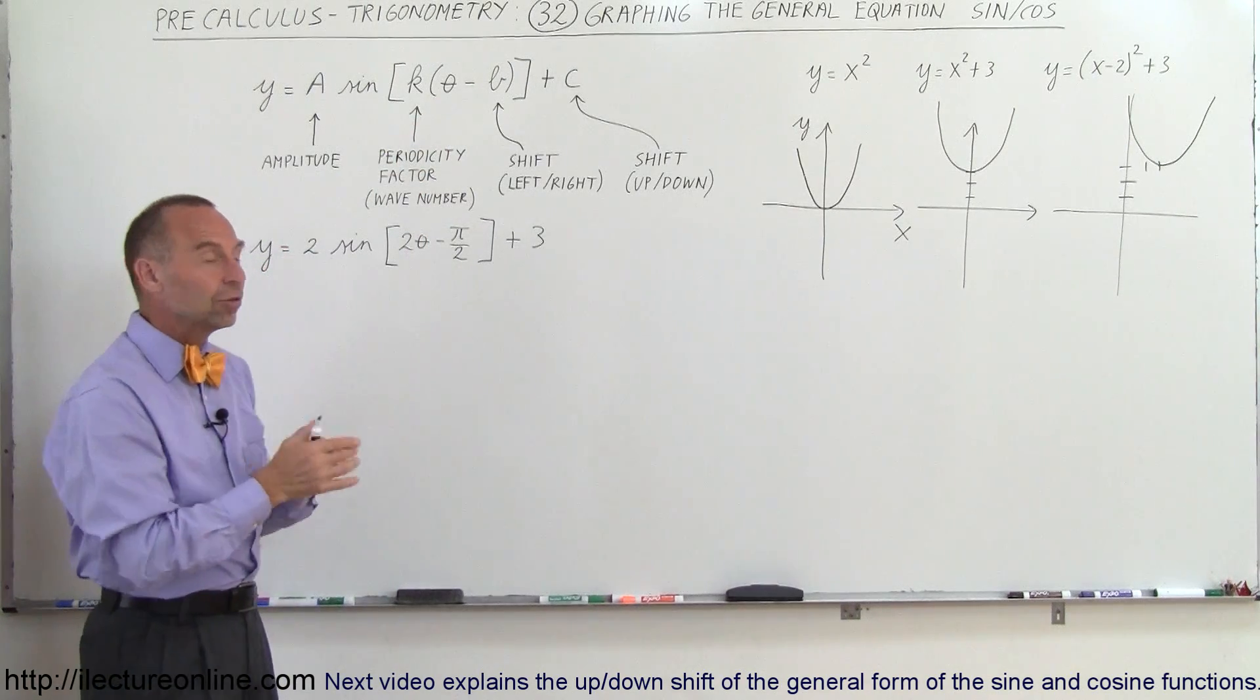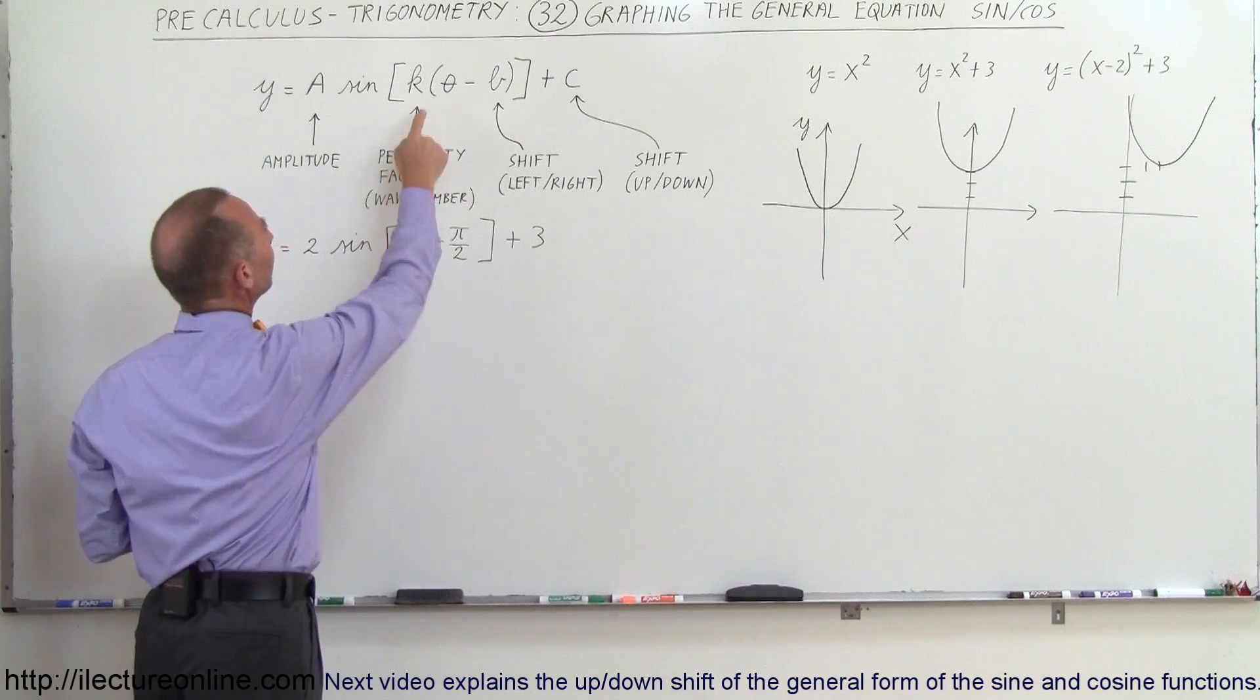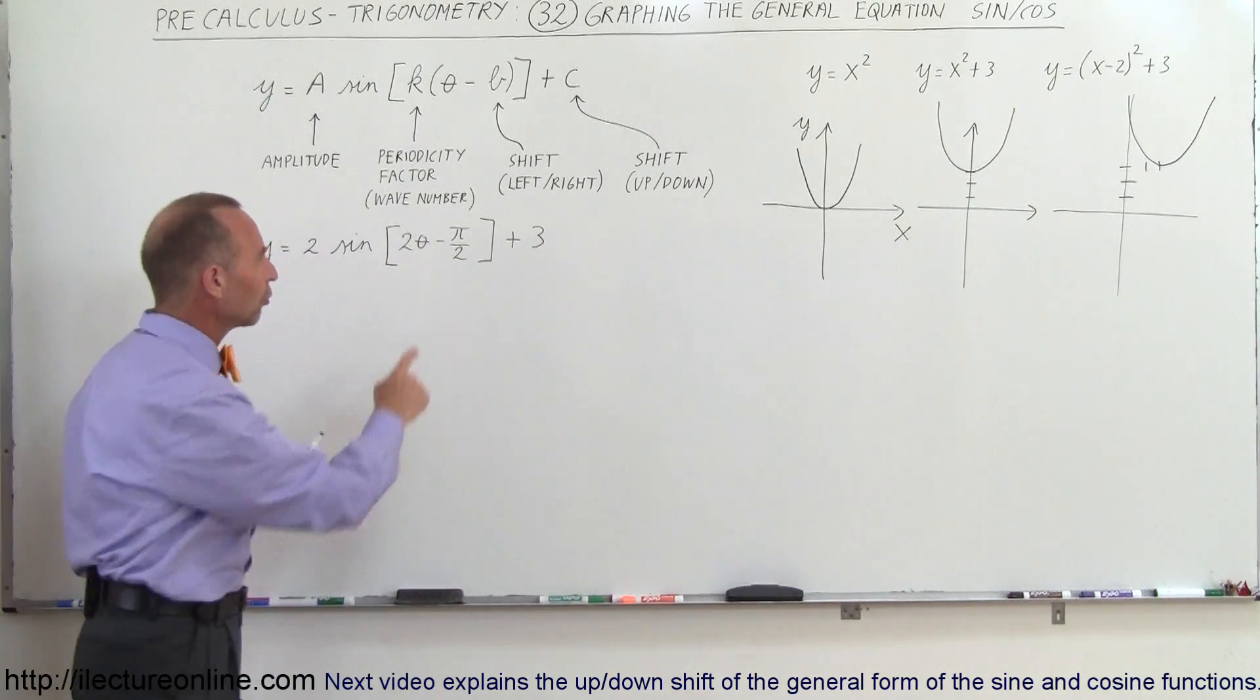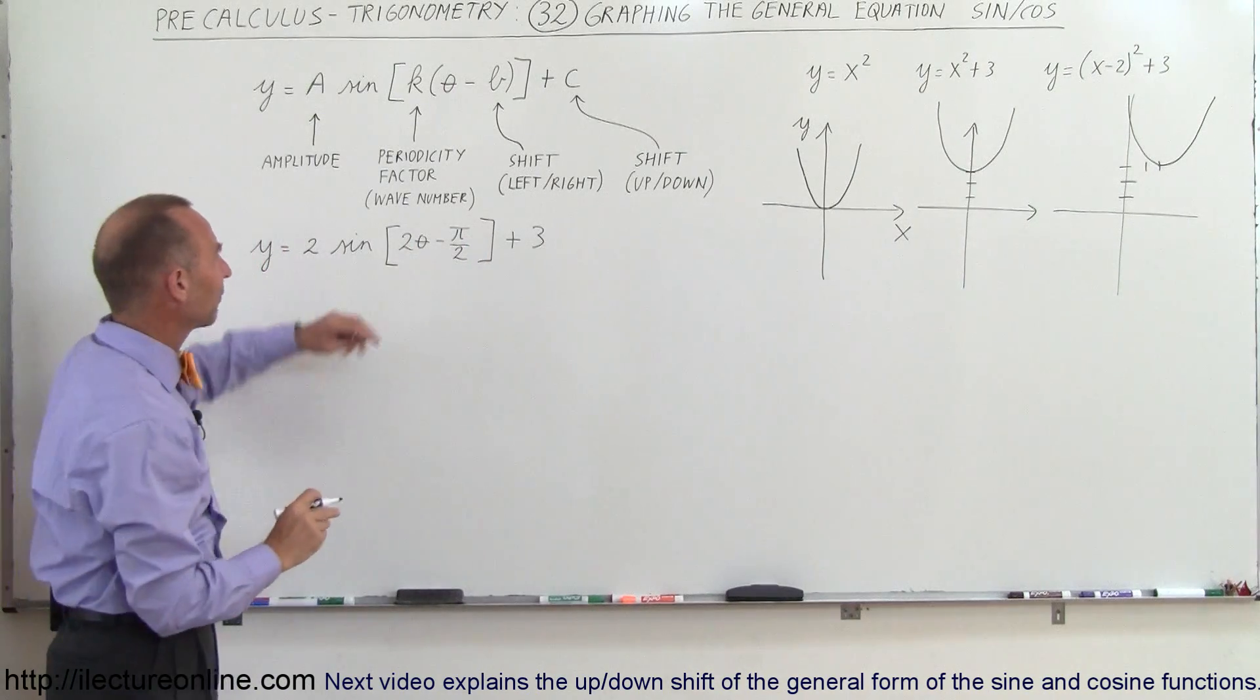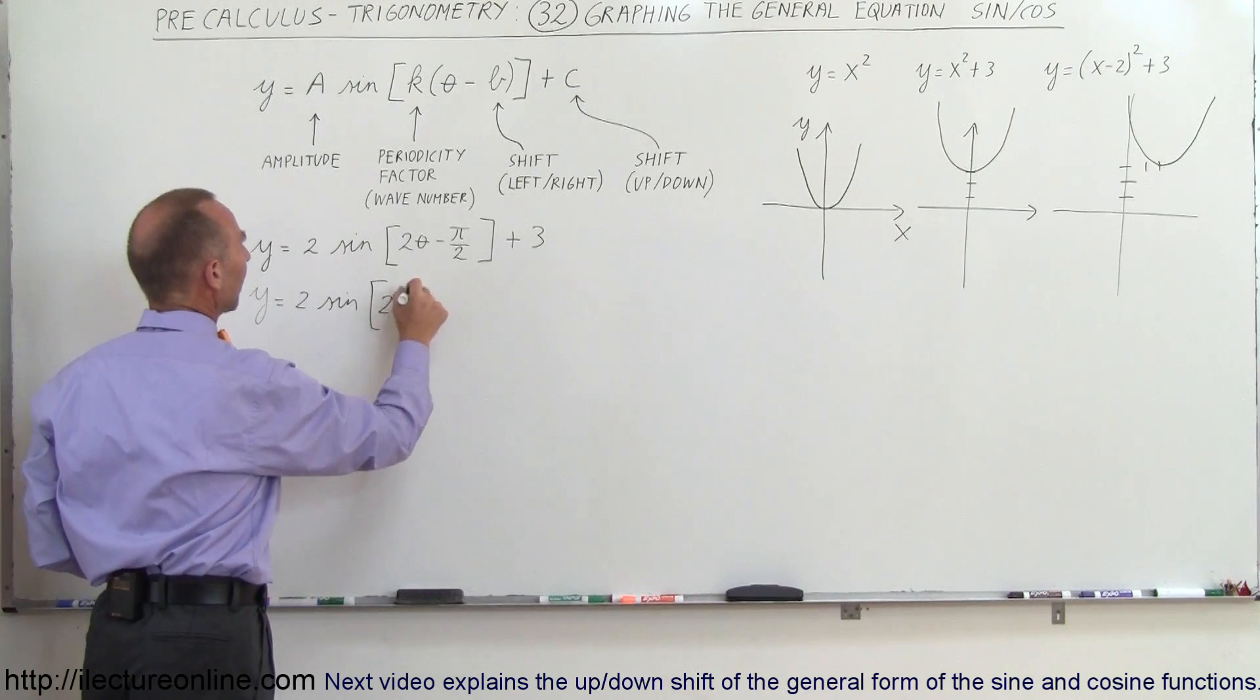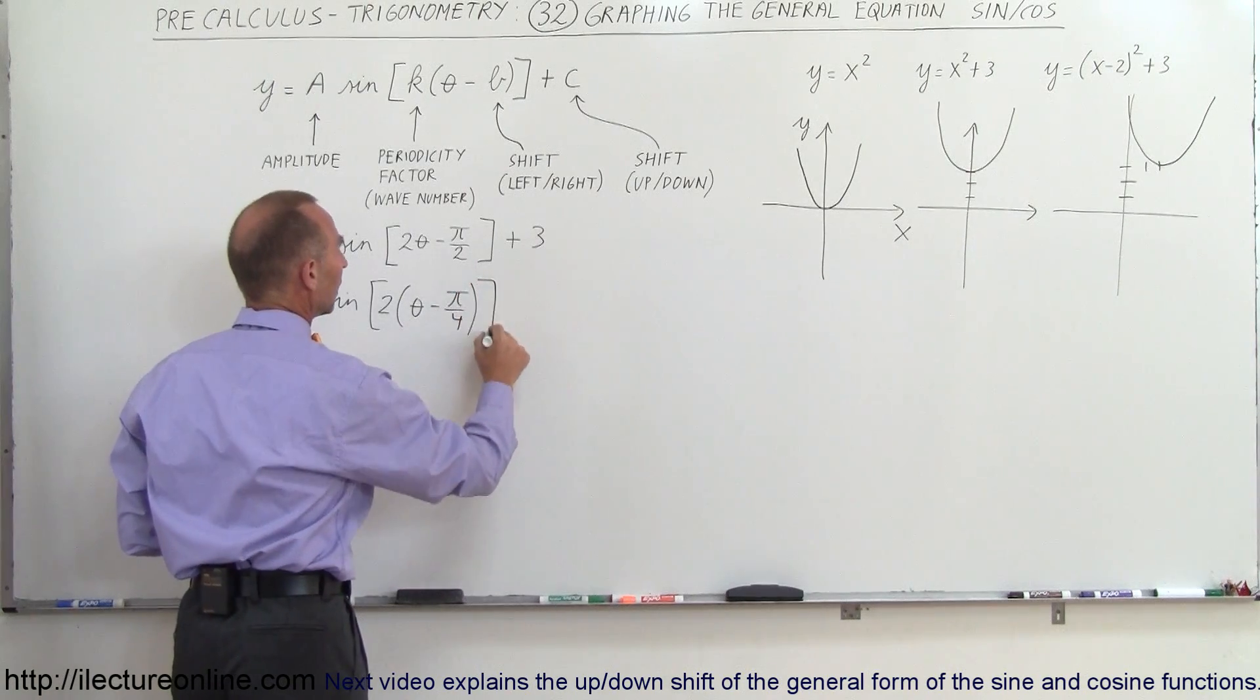The periodicity factor, the number that determines how many complete cycles you're going to have in a 2π period, needs to be taken out of the parentheses like this. So it has to look like that before you can actually try to graph it. Here you can see that you don't have that. You have to factor out the 2 first and have θ minus something here. Well let's do that first so we have this looking exactly the way it looks there. So here we have y equals 2 times the sine of 2 times θ minus, now since we factored out of 2, this becomes π divided by 4 plus 3.